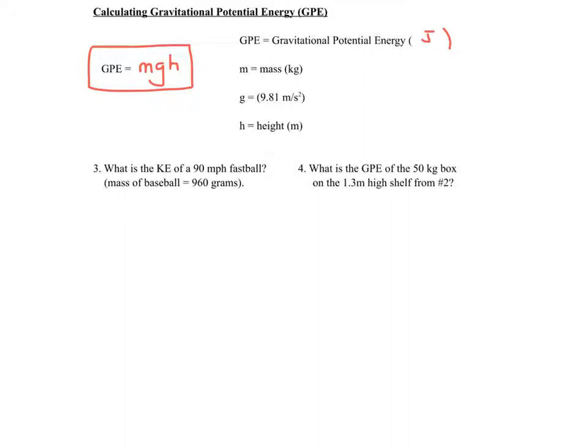Problem number three here, the kinetic energy of a 90 mile per hour fastball. Now, we do need to convert that into meters per second, because we do not want miles per hour. And you don't need to show the work for that, but a 90 mile per hour comes out to be, to two sig figs, 40 meters per second.